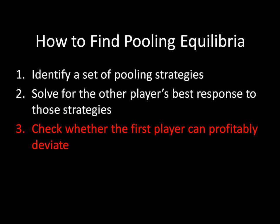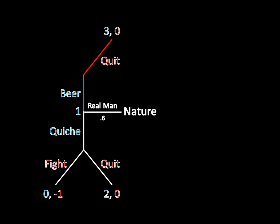The third step is to check whether the first player can profitably deviate. Remember, if either type has a profitable deviation, the strategies do not form an equilibrium. Consider a real man's potential deviations. At best, he earns two down below. But he earns his best possible payoff of 3 by sticking to his equilibrium strategy. Therefore, he has no profitable deviation.